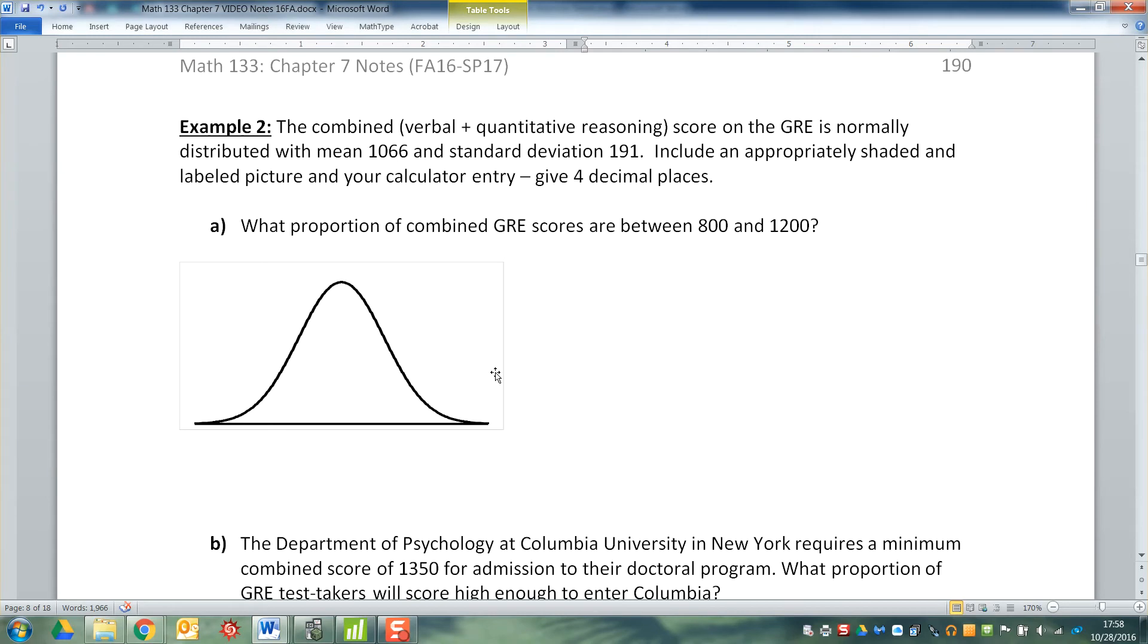The combined verbal and quantitative reasoning scores on the GRE is normally distributed with mean 1066 and standard deviation 191. The GREs are sort of like the SATs—in fact, they're run by the same company—but they're for students who want to go to graduate school. So you finish your bachelor's, take a GRE test, and you can go on to get a graduate degree. It's called the Graduate Records Exam. It has a normal distribution because they designed it to be that way.